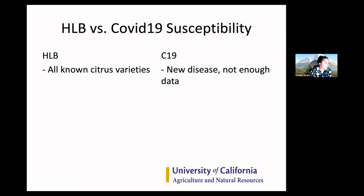With COVID-19, this is a new disease and we don't have enough data — we don't know how or why it affects certain people more than others. There's a lot of conjecture about why it affects some people differently. We don't fully know what we're talking about, which is why it's so important to take it seriously, protect yourself, and try to protect your neighbor as well.